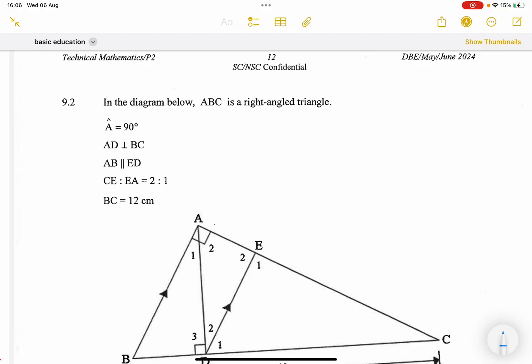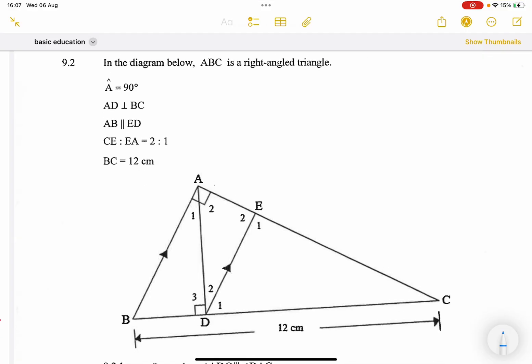They say in the diagram below, we've got ABC, which is a right-angled triangle. They tell us that angle A is 90 degrees, so that's angle A over there indicated, and they tell us that AD is perpendicular to BC. Okay, so we know that this angle is 90 degrees as well as D3.